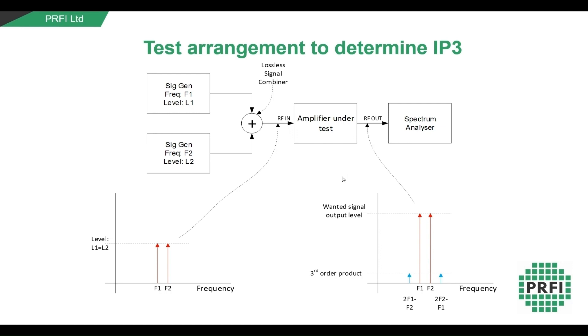The intermodulation of the input signals generate products on many different frequencies, some by the squared, some by the cubic, some by the quartic terms and so on. But of the cubic terms, third order products, those generated close to the input signals at 2F1-F2 and 2F2-F1 are problematic because they appear in nearby channels, can cause interference to users of these channels and, once created, are difficult to remove.